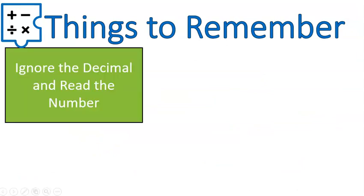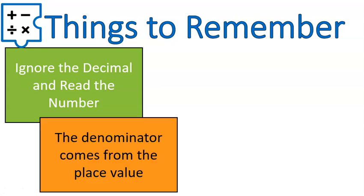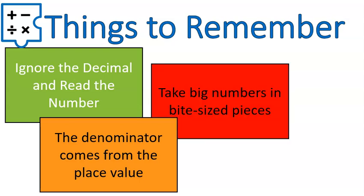So a couple things to remember. Ignore the decimals and read the number. The denominator comes from the place value. So make sure that you look where the value, where the numbers end. That's your place value. And with big numbers, take them in bite-sized pieces. I will work through every single question in the worksheet. So if you struggle with any of the questions from the worksheet, please watch the video recording of that. It gives you lots of time to practice the things that we've talked about in this mini lesson. Good luck with that, and have a wonderful day.